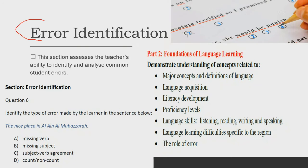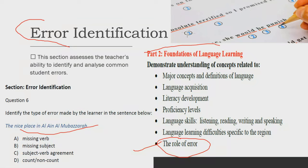This part of the exam deals with error identification, which comes under the foundations of language learning section, where you have to spot the role of the error. If you are a practicing English teacher, this is going to be a piece of cake because you are already correcting your students' mistakes while marking assignments. A sample question: identify the type of error made by the learner in the sentence below — options are missing verb, missing subject, subject-verb agreement, or count/non-count. According to the answer key in the study guide, the answer is A — the verb is missing.